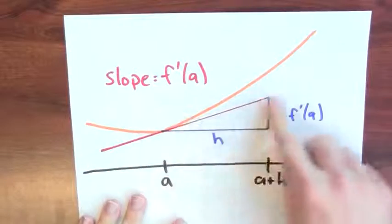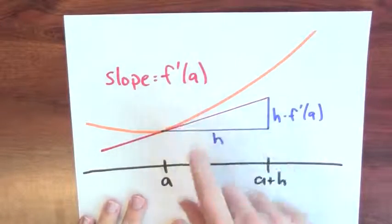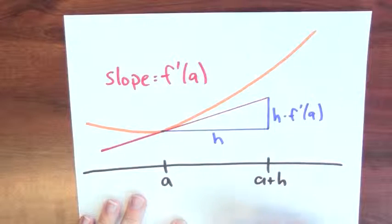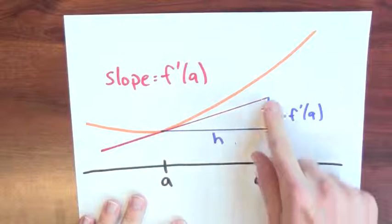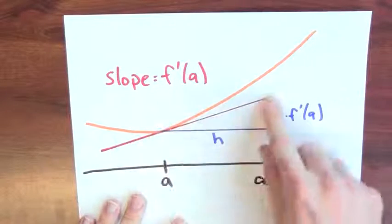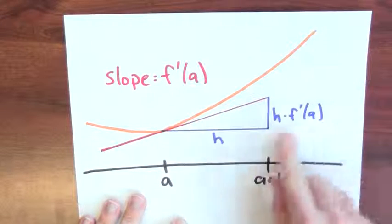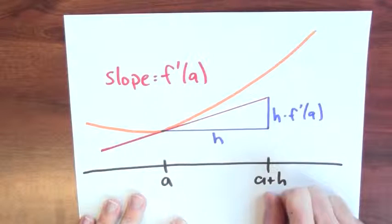Here I've got this tangent line and the slope of that tangent line is the derivative of the function at the point a. That means that this triangle can be understood. This slope being f prime of a, this base being h means this height is h times f prime of a.